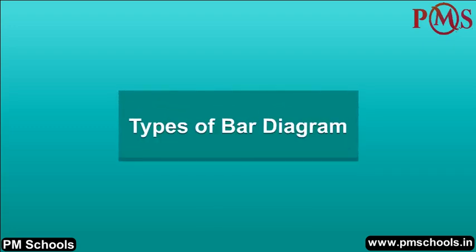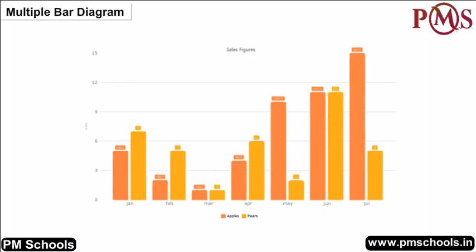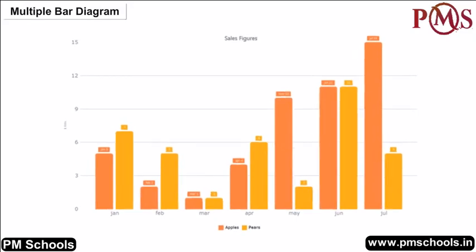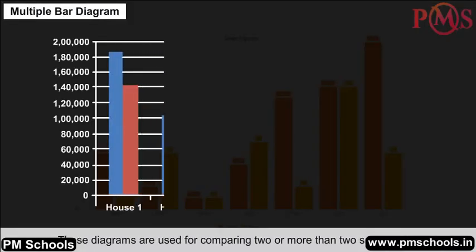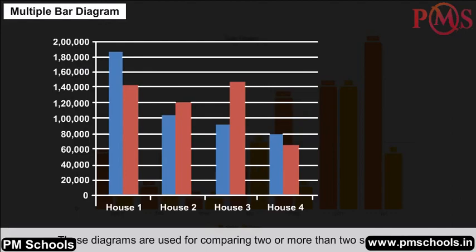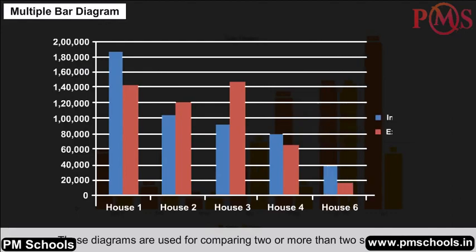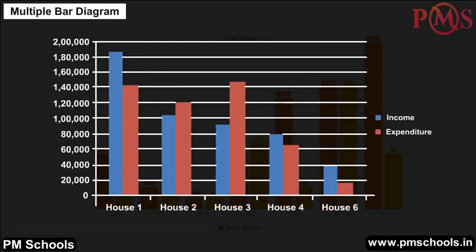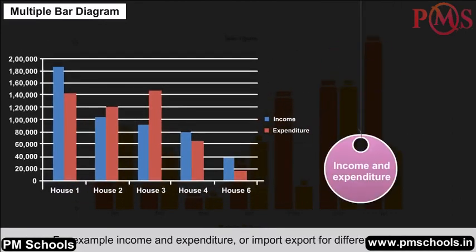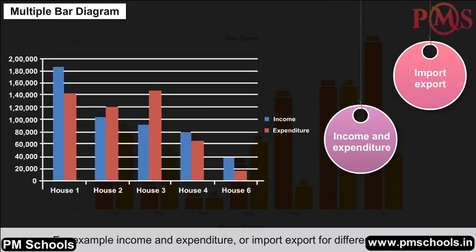Multiple bar diagram: These diagrams are used for comparing two or more sets of data — for example, income and expenditure, or import-export for different years.